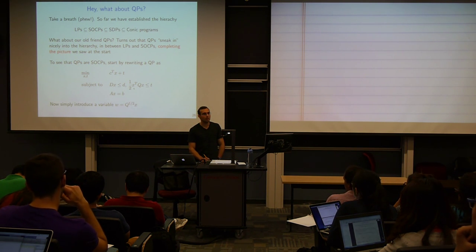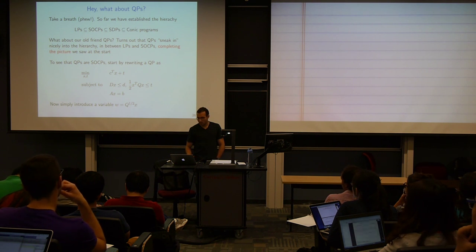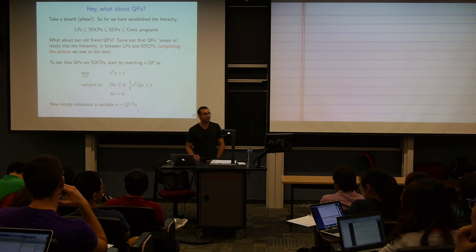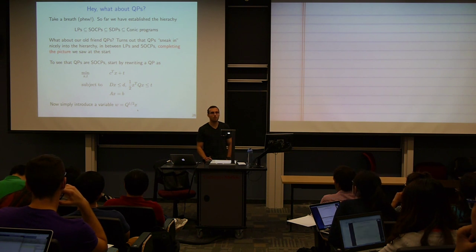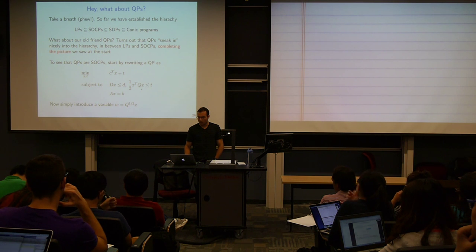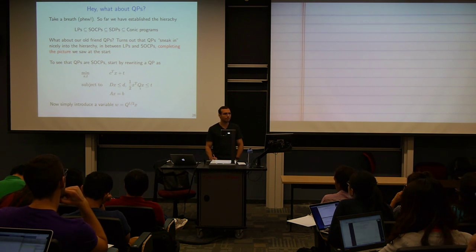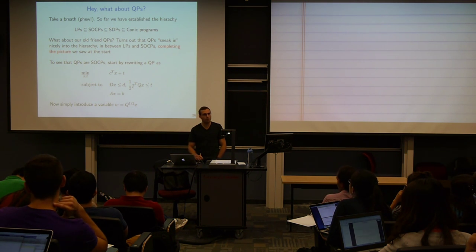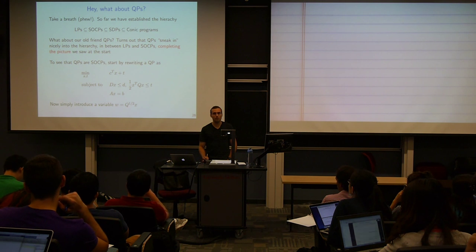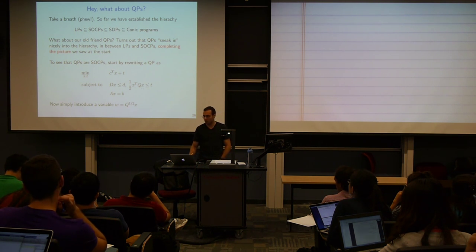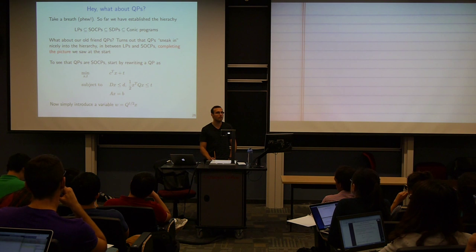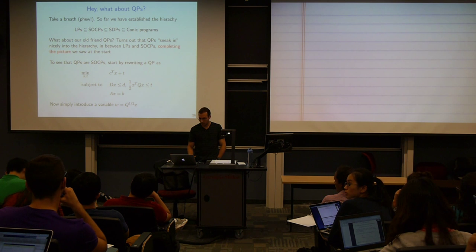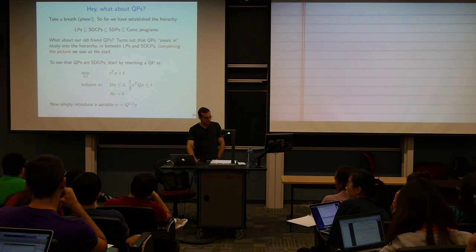This is actually just a second-order cone problem. You can see that by making a variable substitution: let W equal Q to the one-half times x — the symmetric square root of Q, which exists if Q is positive semi-definite. Then this becomes basically the two-norm of W bounded by the square root of t, and everything else are constraints you know how to handle in an SOCP. That was the connection, completing the hierarchy.